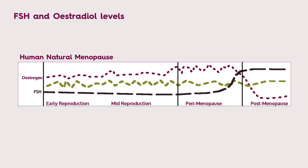Looking at the estrogen and FSH lines on this graph: when the ovaries start to decline, the signal from the brain becomes more intense, stimulating more estrogen production, which in turn keeps the FSH rise under control. So if a woman's FSH is normal but her estrogen is elevated, she is at a more advanced reproductive stage. This means FSH should really be tested in combination with other hormones — making it more complicated overall.